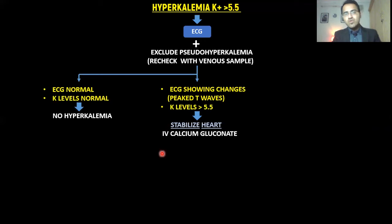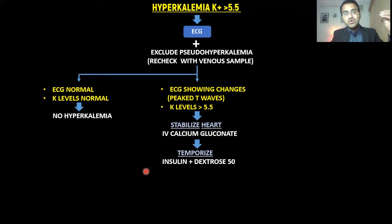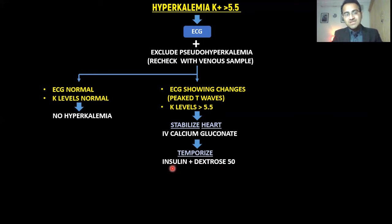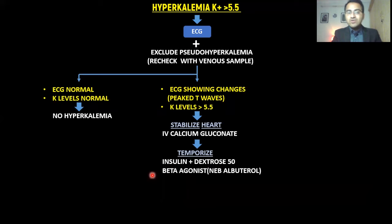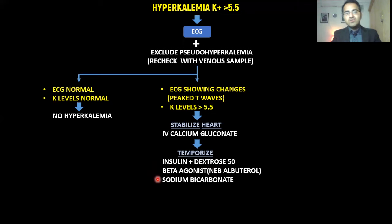After stabilizing the heart, you must also lower down the potassium levels — this is called temporization. You give insulin with dextrose: insulin pushes potassium into the cells, lowering serum potassium, while dextrose prevents hypoglycemia. You also give nebulized albuterol, a beta agonist that also drives potassium into the cells, and sodium bicarbonate to further lower potassium levels.